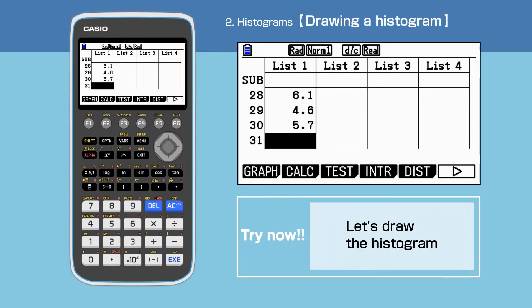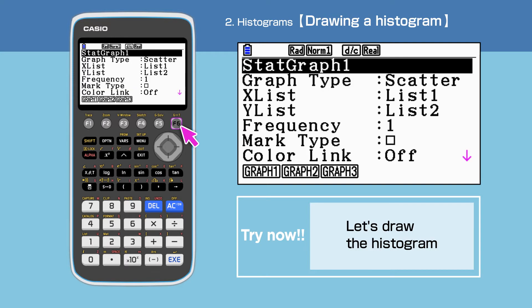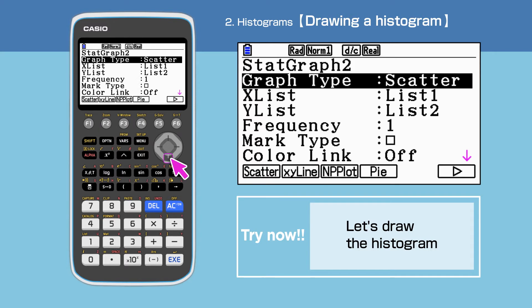First, we will observe the distribution of this dataset. Press F1 to select graph, then F6 to open setup. Press F2 to select start graph 2. Highlight graph type, then press F6 followed by F1 to select histogram.